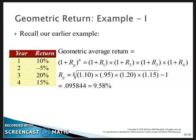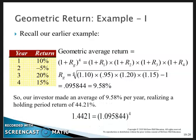It comes out as 0.095844 or 9.58%. Our holding period return was 1.4421. We take the fourth root of that and get 1.095844, subtract 1, and that's how you get 9.58%. We'll continue with geometric returns on the next lecture.